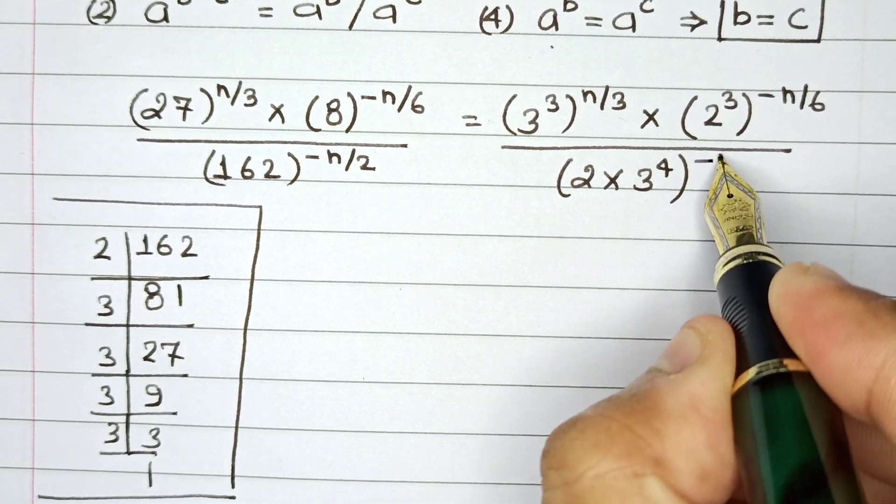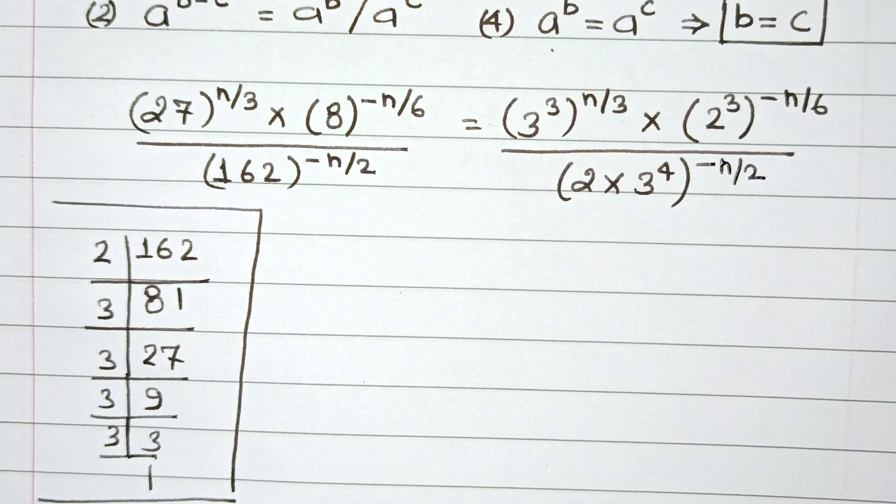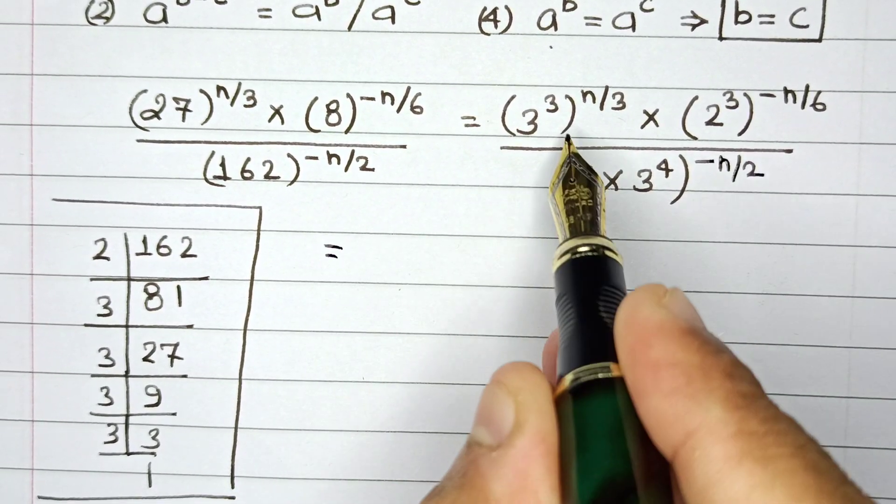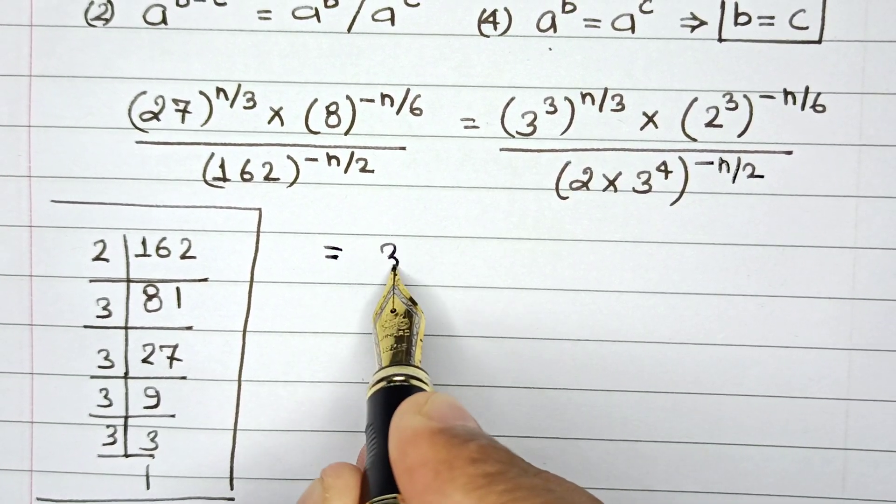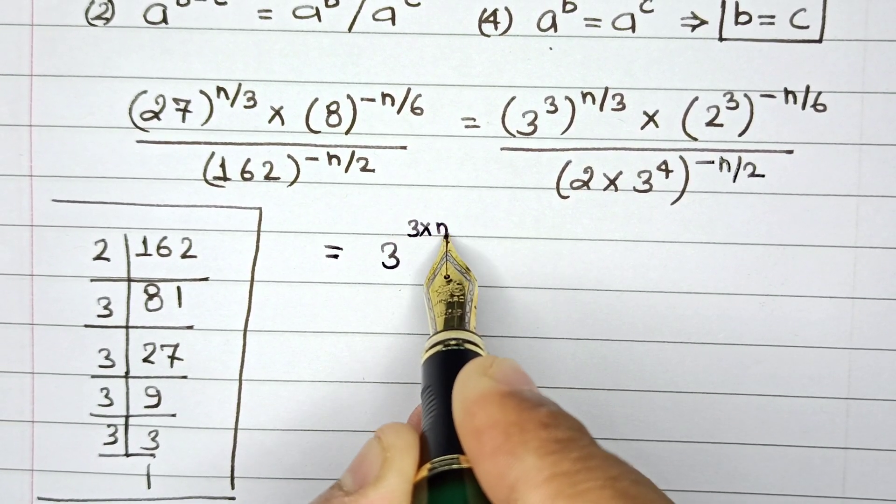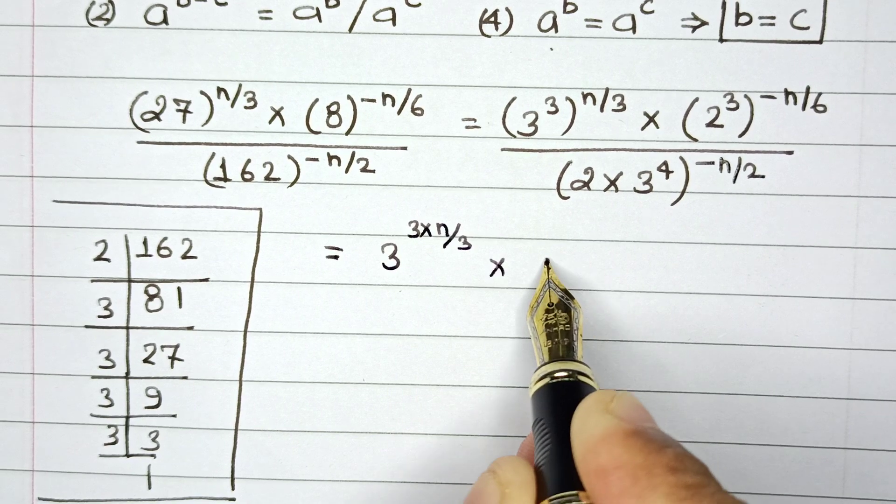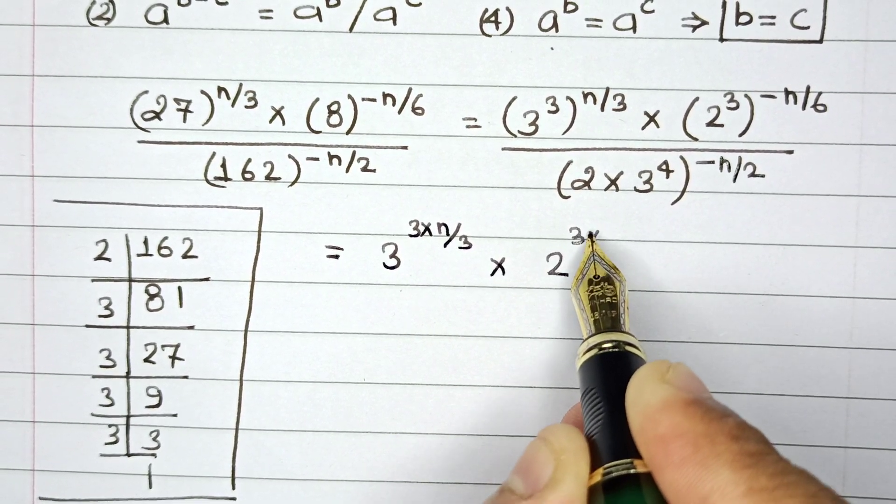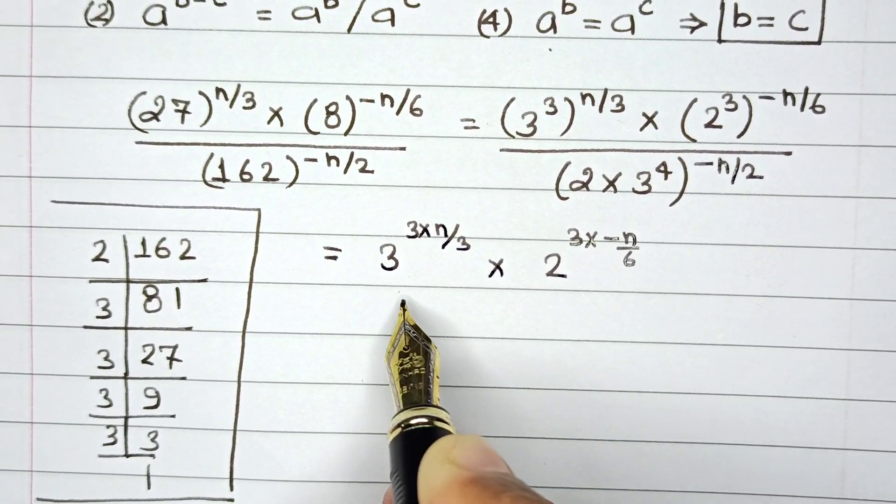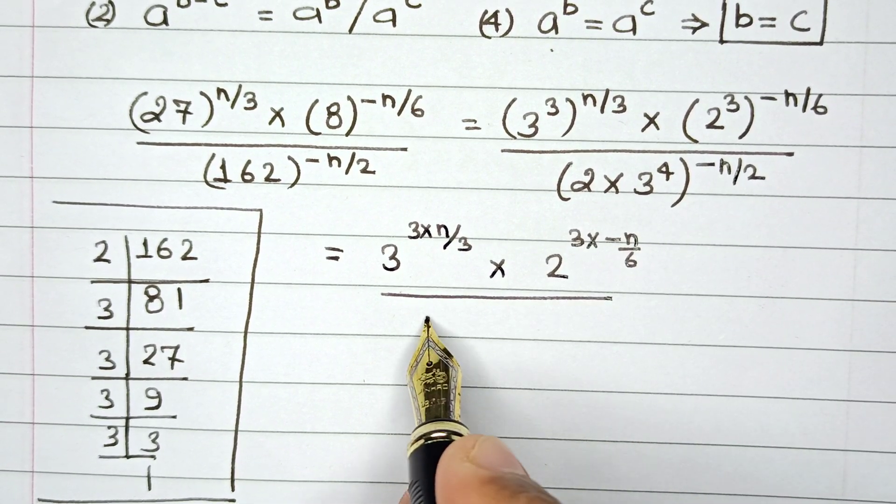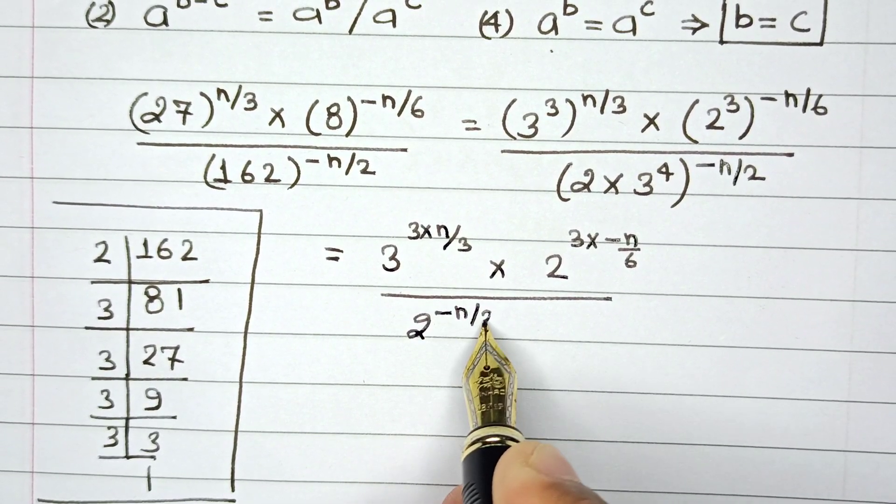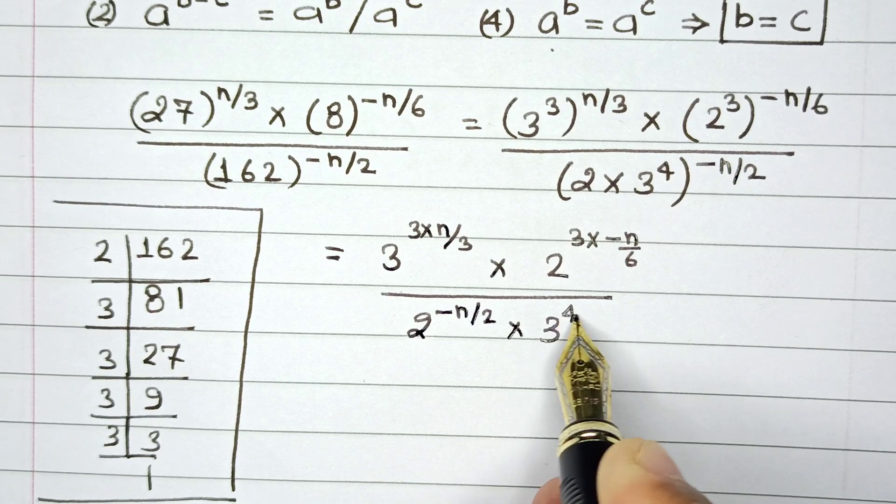...so let me write this as 2 multiplied by 3 raised to the power of 4, to the power, the power here is minus of n by 2. So let me write this as minus of n by 2. Now let us separate the power. So this can be written as 3 raised to the power 3 multiplied by n by 3, multiplied by 2 raised to the power 3 multiplied by minus of n by 6...